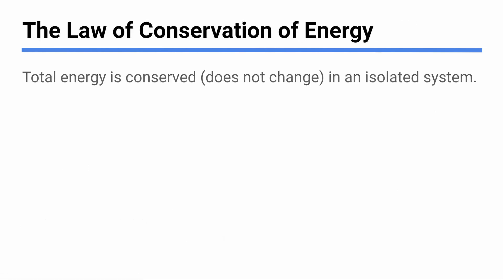There's a rule about energy you've probably heard: energy is conserved. The total energy of a system is conserved in an isolated system. If the IB asks you to define the law of conservation of energy, don't just say 'energy is conserved' — explain what conserved means. It means it doesn't change: you end up with the same amount of energy you started with, as long as there are no external forces adding or taking away energy.